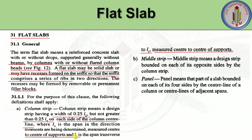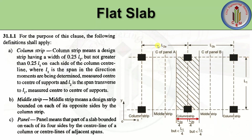So the column strip means the design strip should have a width of 0.25·l2, not greater than 0.25·l1 on each side of the column center line. Here, l1 is the span where we are determining the moment, and l2 is the span transverse to l1. Looking at the diagram, we have a slab panel: this is l1, this is l2a, and this is l2b. There are two spans, which is why we have l2a and l2b. The column strip width is l2a/4 — 0.25 of that distance.